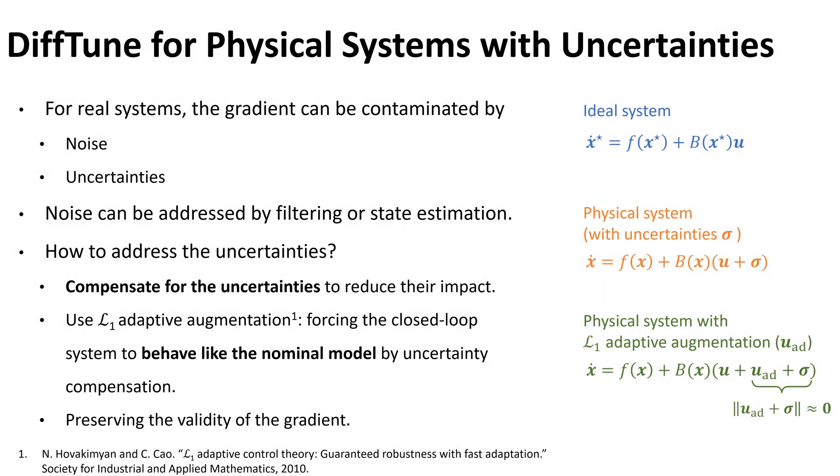In practice, a real physical system may suffer from uncertainties not included in the model. We propose to use L1 adaptive augmentation to cancel out the uncertainties in order to preserve the validity of the computed gradients.